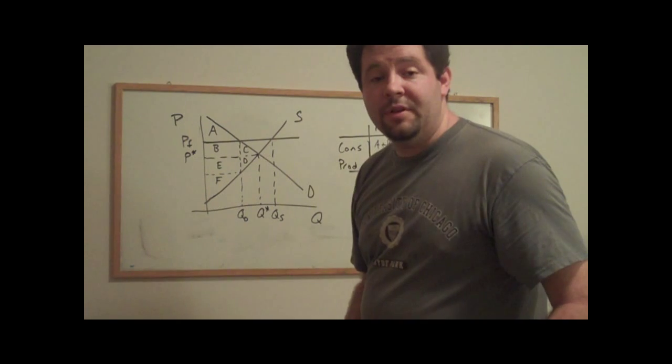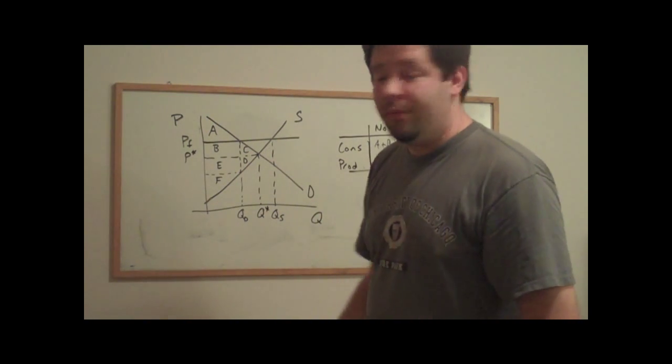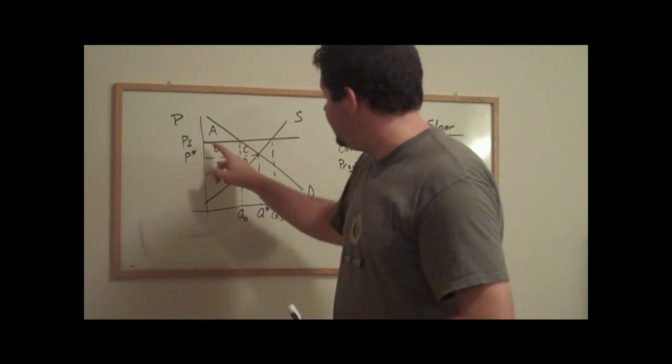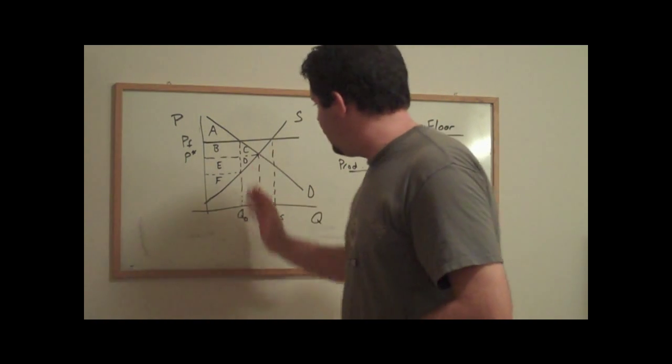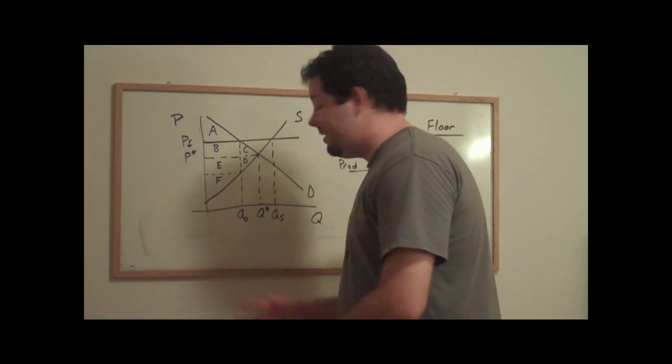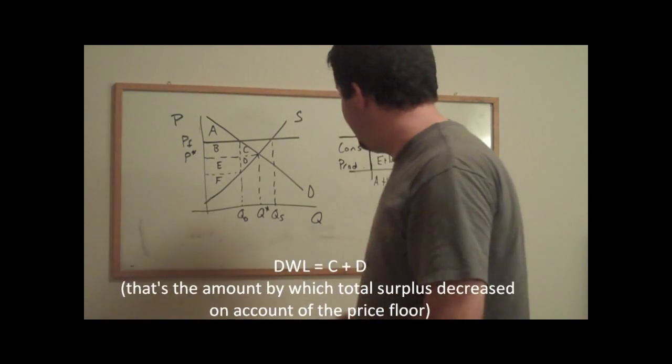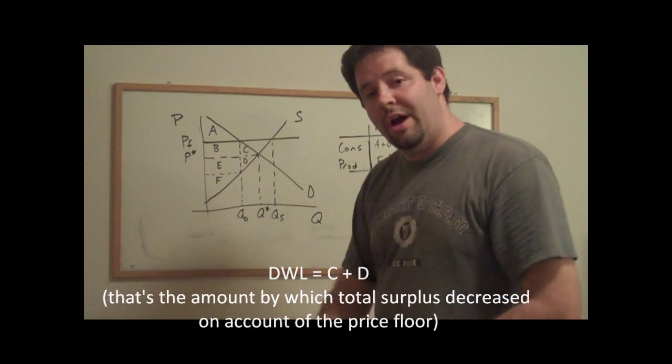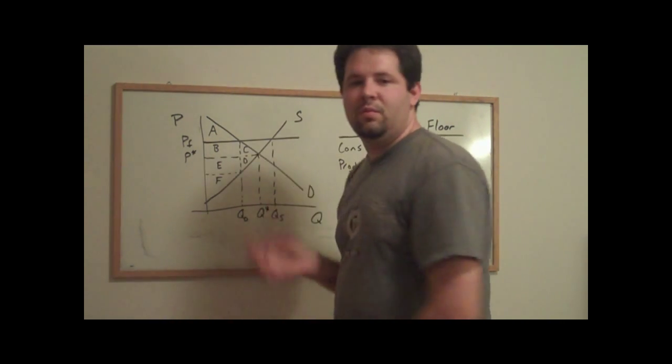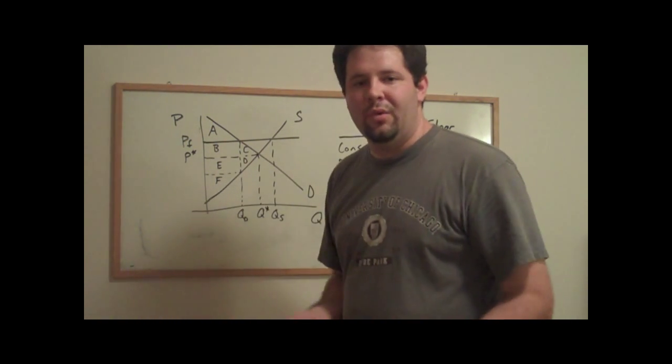Now let's consider what happens when we look at the price floor. If you look at the price floor out to the quantity traded, go up to the demand curve, area A is now consumer surplus. If you look at the price floor down to the supply curve out to the quantity traded, we get B plus E plus F. We'll get some deadweight loss here because we get a lower quantity traded than the equilibrium quantity, and there will be units for which the marginal cost was below the marginal willingness to pay, yet those units went untraded.